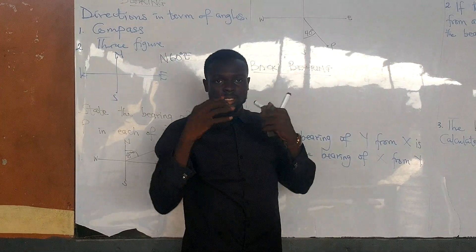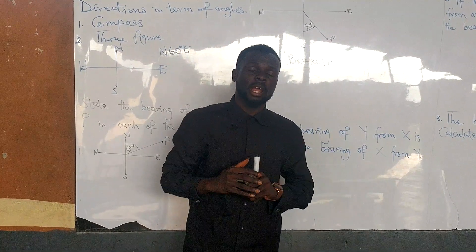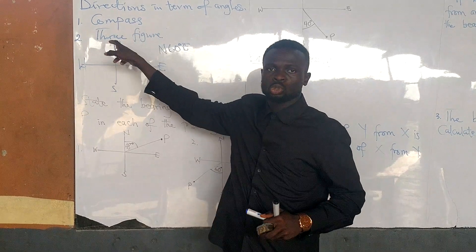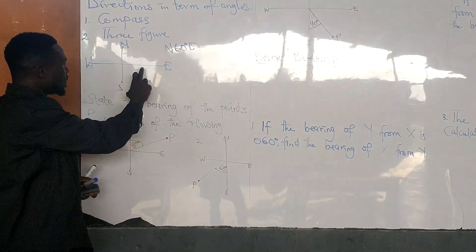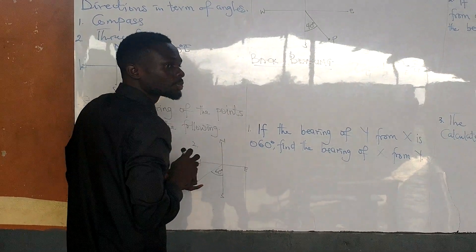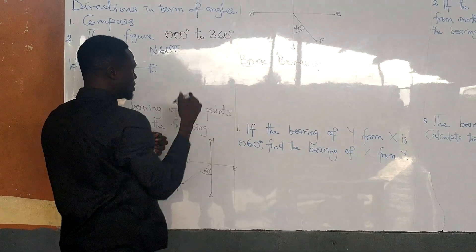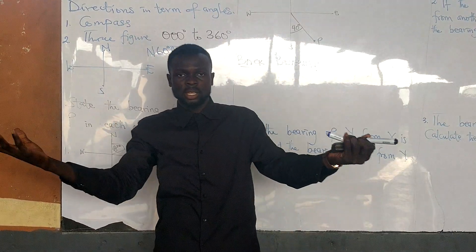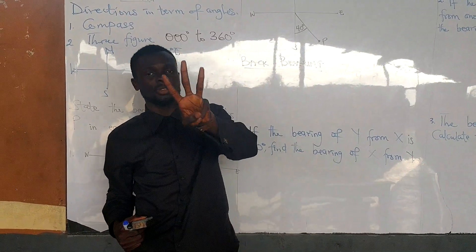Bearing actually gives directions in terms of angles. With the three-figure bearing, it is the type of bearing read starting from the north pole in a clockwise rotation. It ranges from 000 degrees to 360 degrees. As the name goes, it is a three-figure bearing, so the digits are three. To show that an angle is a bearing, we write it in three figures.